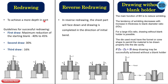The guideline for redrawing is: in the first draw, the maximum reduction of the starting blank is 40 to 45%; in the second draw it is 30%; and in the third draw it is 60%. This is the guideline for the redrawing operation.